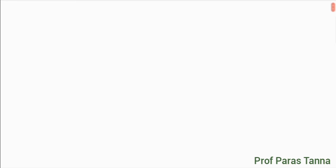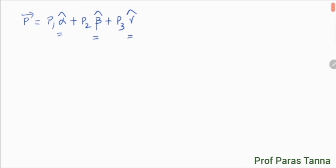Hello students. Till now we have learned vector algebra. It is quite clear that a vector can be written as a sum of two or more vectors along certain fixed directions. Let's consider this example: P vector equals P1 alpha-cap plus P2 beta-cap plus P3 gamma-cap, where alpha-cap, beta-cap, and gamma-cap are the unit vectors along chosen directions.